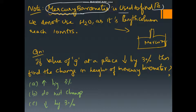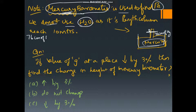A mercury barometer is the device used to find atmospheric pressure. We use mercury and not water because the mercury rises up to only 76 cm, making a practical tube. If water were used, it would rise up to 10 meters — you cannot build such a long tube. That is why we use a mercury barometer.